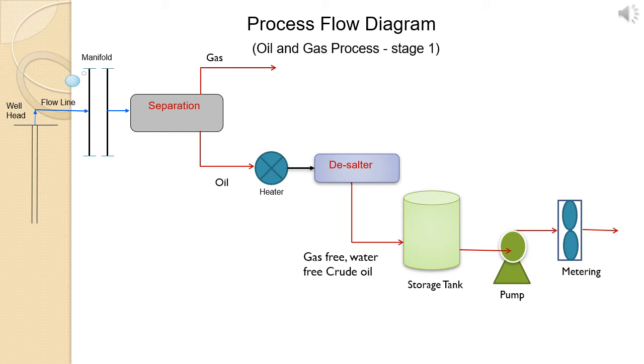The separated gas is feeding to another gas processing stage, or gas compressor, or gas turbine, according to the requirement of that specific field. We are talking about this oil route only now. The gas stage we can discuss at a later stage.